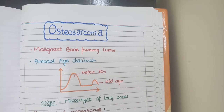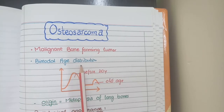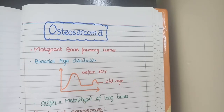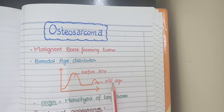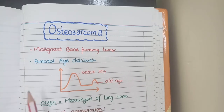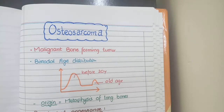Osteosarcoma is a slight deviation from this rule. Instead of just being more common in the younger age group, it shows a bimodal age distribution, meaning the tumor most commonly occurs before 20 years of age, but can also occur in the old age group. A large peak is seen in young age and a smaller peak in old age — this is called bimodal age distribution.